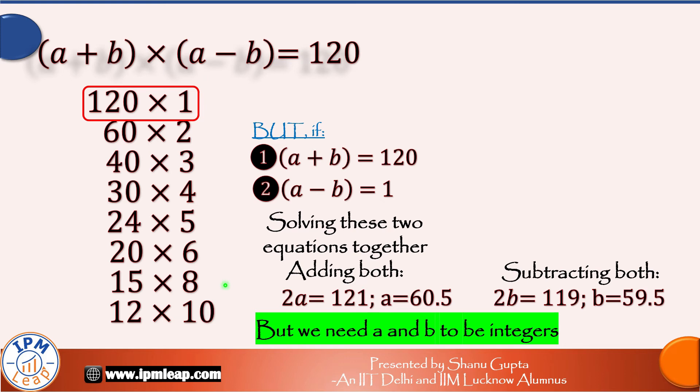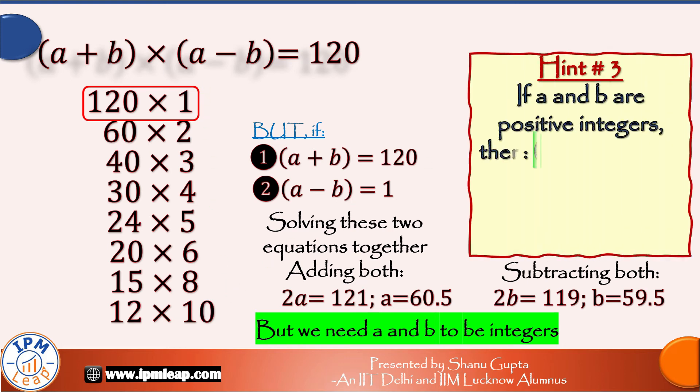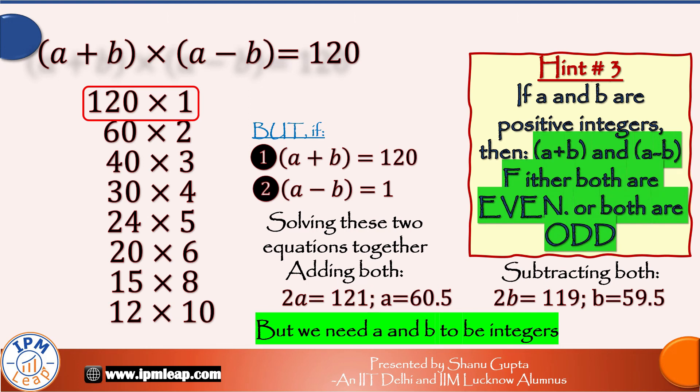And here comes hint number 3 which is if a and b are positive integers, then a plus b and a minus b either both are even or both are odd. You can verify this by taking various pairs of numbers.